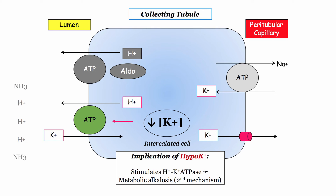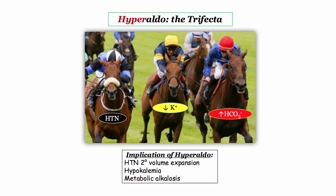Reflecting on the hypokalemia already discussed, when the intracellular concentration of potassium is diminished, this drives the hydrogen-potassium ATPase pump, causing further excretion of hydrogen ions in favor of potassium absorption, worsening the metabolic alkalosis. And here it is — the trifecta of hyperaldosterone secretion: hypertension, hypokalemia, and metabolic alkalosis. When you see or hear this combination, they are begging you to think hyperaldosteronism.